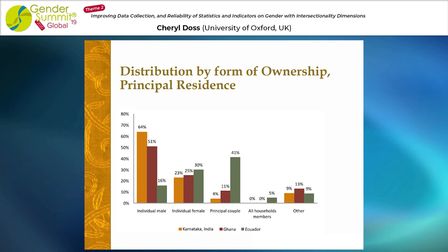Looking at the form of ownership of the principal residence: earlier we just counted a man or a woman as being an owner whether individual or joint, but here we break it out. In Karnataka, 64% of the principal residences are owned individually by a man, only 23% by women, and 4% owned jointly by the principal couple. That's in real contrast to Ecuador, where 41% are owned jointly by the principal couple. This explains in part the high level of ownership by women in Ecuador — in so many of the couples, men and women own it jointly.